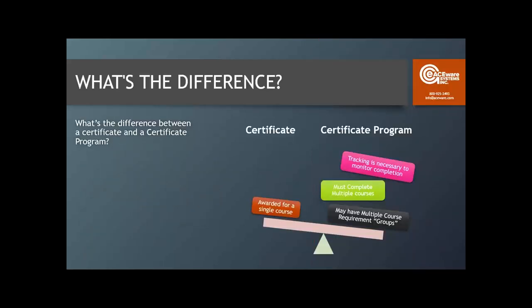So what is the difference between a certificate and a certificate program? A certificate in the basic sense — what some people call a 'happy sheet' — is where you take one class and are awarded a certificate that you have successfully completed the requirements for course ABC. That's basically showing up at the last day of class to get a certificate. In a certificate program, you're building in additional requirements. The biggest thing is that you must complete multiple courses in order to earn the certificate.